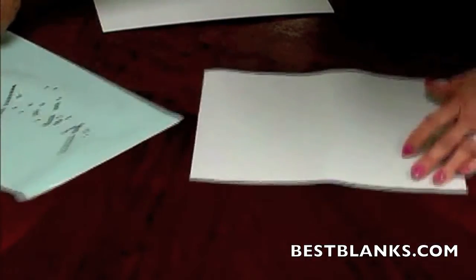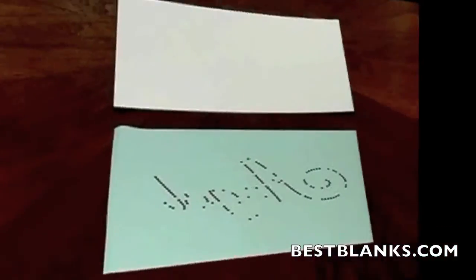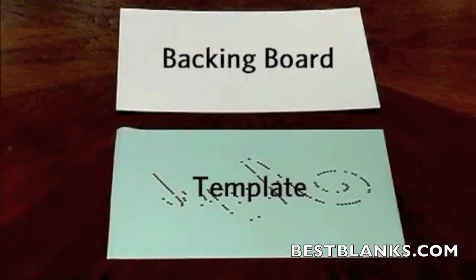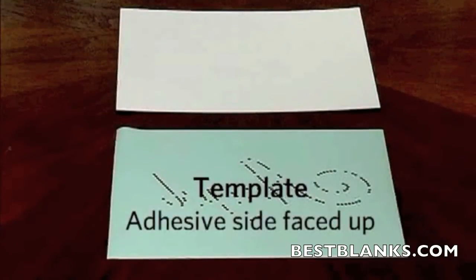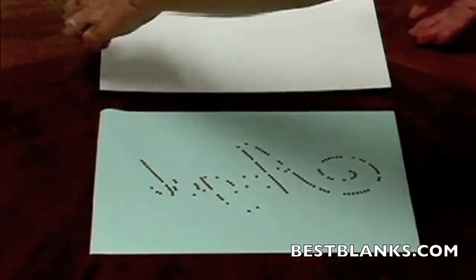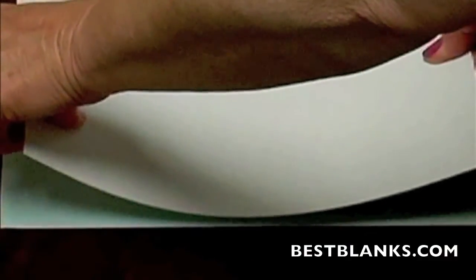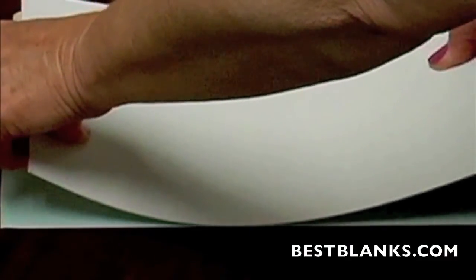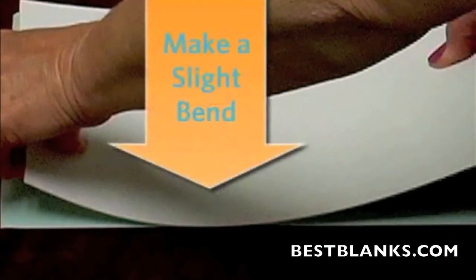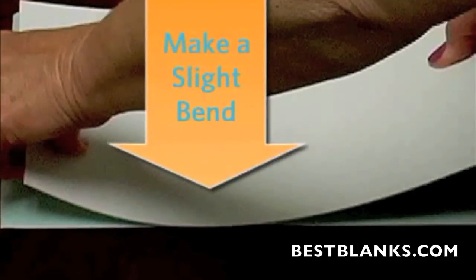Affix the template material to a rhinestone backing board. Depending on the pattern, this is best done by placing the template face down on the table with the adhesive side facing up. Next, take the rhinestone backing board and, prior to placing it on the template, make a slight bend in the middle of the board.